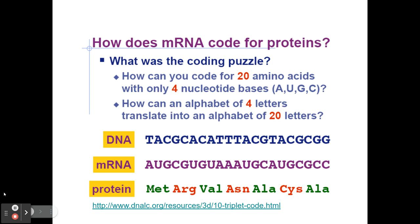So how does messenger RNA code for proteins? There are approximately 20 amino acids. In AP Biology, we assume there are 20 amino acids that all living organisms on the planet share, with a couple of exceptions in extreme bacteria — we're going to ignore that. There are 20 amino acids among the thousands that exist, but all life uses this small subset of 20. But there are only four nucleotide bases.